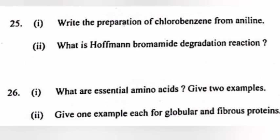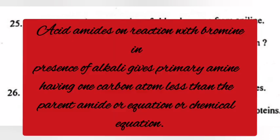Part 2: What is Hofmann bromamide degradation reaction? Answer: Acid amides on reaction with bromine in presence of alkali gives primary amine having one carbon atom less than the parent amide, or equation or chemical equation.